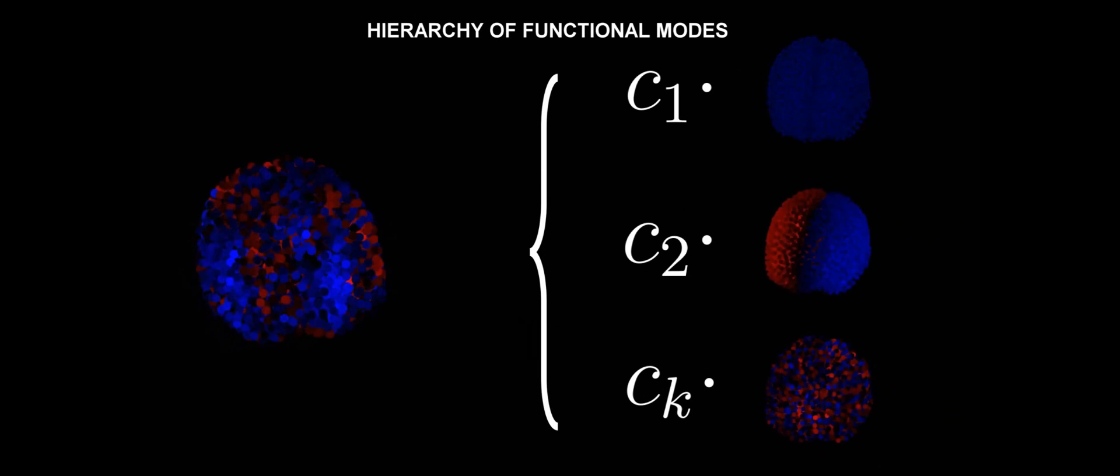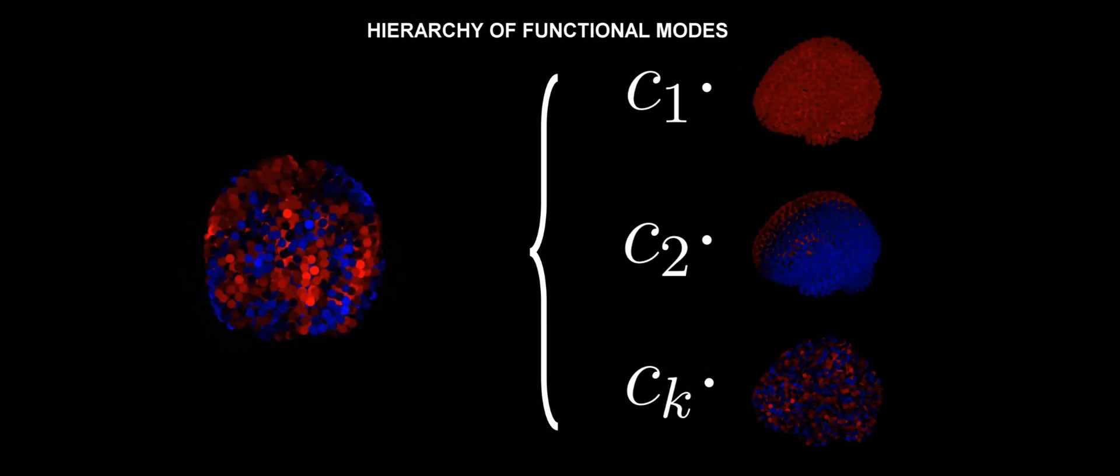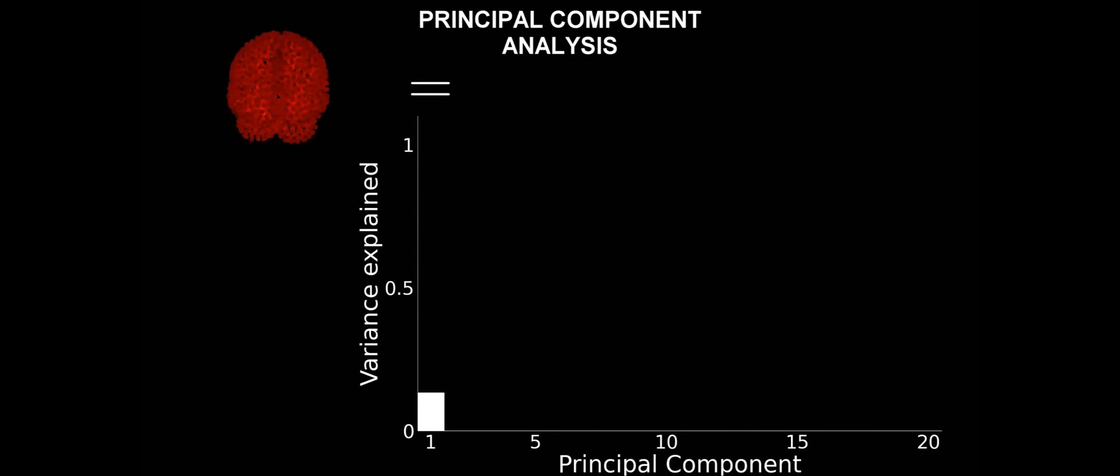Time series are a mixture of many dynamical states, some of them ordered, some of them lacking any particular structure. If we want to decompose the time series into a set of independent dynamical states, we can use principal component analysis.